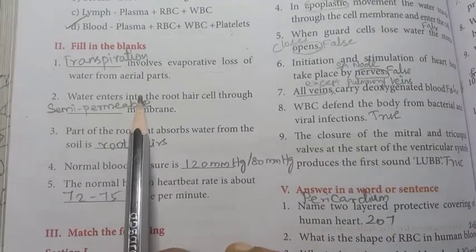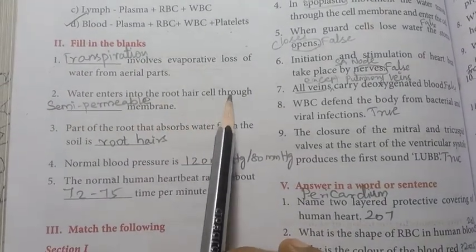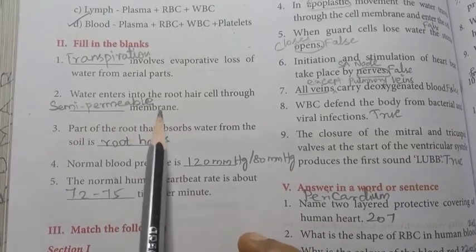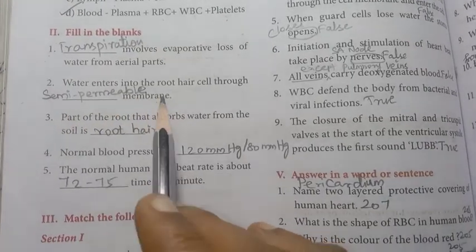Second: water enters into the root hair cell through semi permeable membrane. Answer is semi permeable membrane.